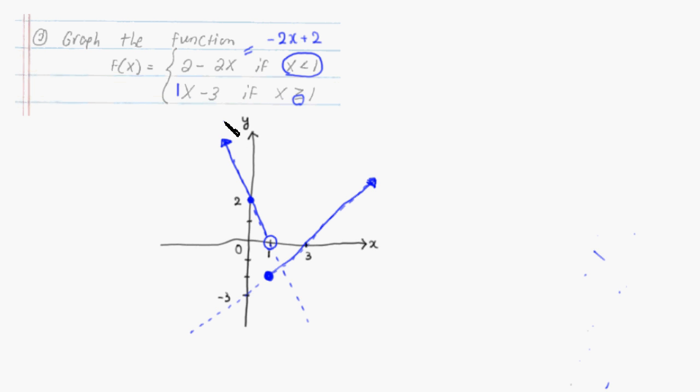So this half of the line should be included. The combination of these two pieces of graph is going to be the graph of this piecewise defined function. That's it. I hope this was clear.